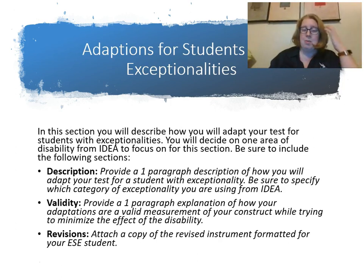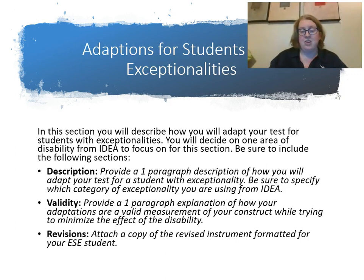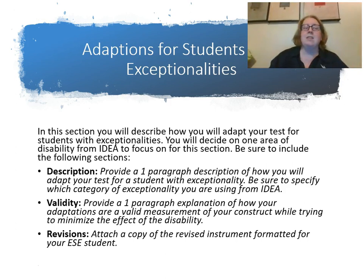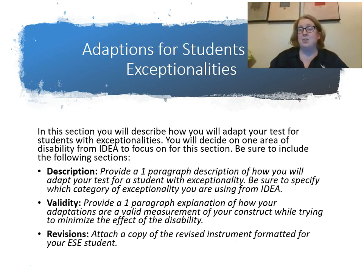For students with exceptionalities, take one area from IDEA — go back to the PowerPoint on students with exceptionalities and pick one. First, provide a description of how you'll adapt your test for a student with that exceptionality; tell me which area you're thinking about and be as specific as you can. Then provide a one-paragraph explanation of how your adaptations are a valid measurement of your construct while trying to minimize the effect of the disability. For example, if you had a math test and were dealing with dyslexia, talk about how you can still measure math while lowering the effect of the reading disability. Then in the revisions section, actually take the test you wrote and show me the revisions — create a revised test for students with exceptionalities, which can be attached in your appendix or as a separate file.